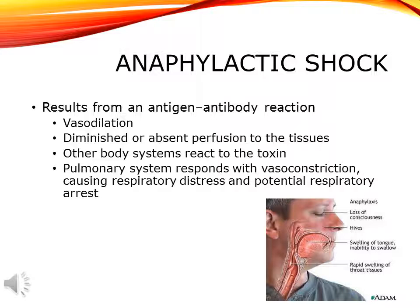During anaphylactic shock, the body causes vasodilation of the blood vessels. When the blood vessels dilate, blood starts to pool and is not flowing or perfusing like it normally would. When blood pools in the periphery, you'll see diminished or absent pulses. Other body systems also react — most commonly the pulmonary system, which causes vasoconstriction, respiratory distress, and possibly respiratory arrest.